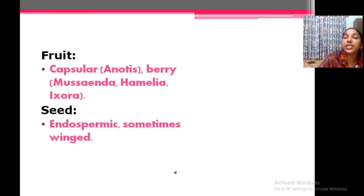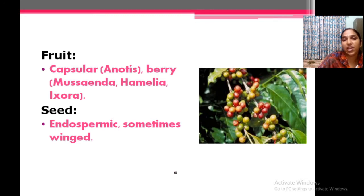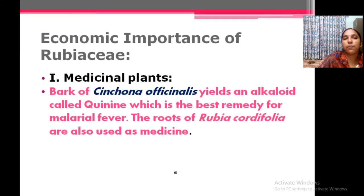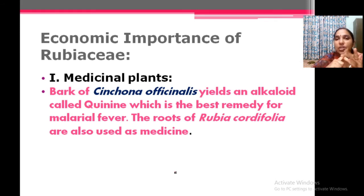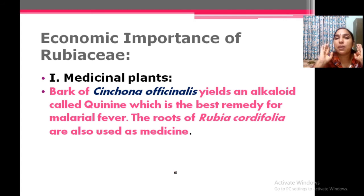The fruit is a capsule. In Mussaenda and Haemelia the fruit is a berry. The fruit of coffee is also a berry. So the typical flower features are: tetramerous, actinomorphic, bisexual, bicarpellary, epigynous — that is inferior ovary — and also opposite decussate leaf with interpetiolar stipules. This is the typical feature of the family Rubiaceae.